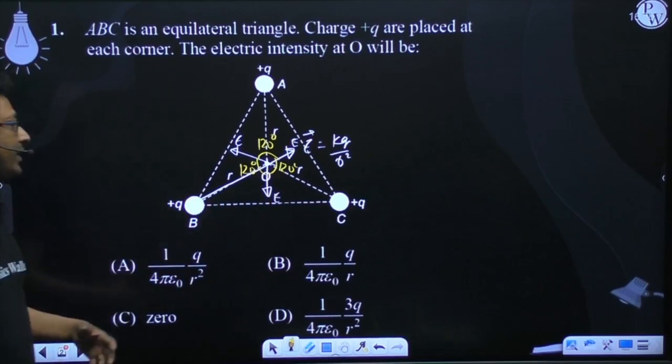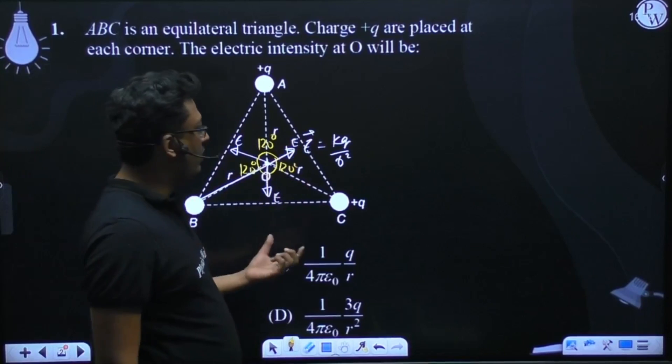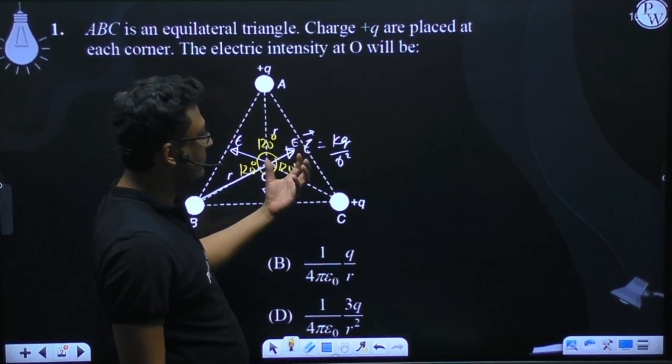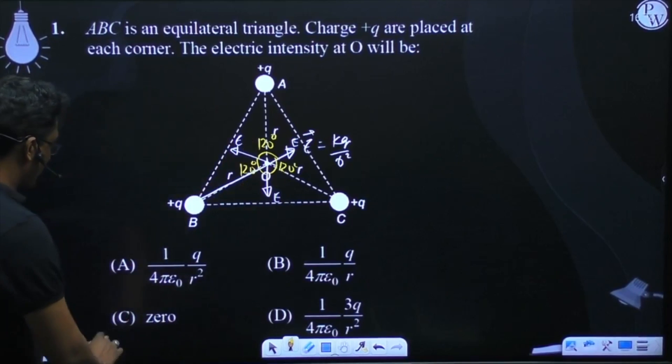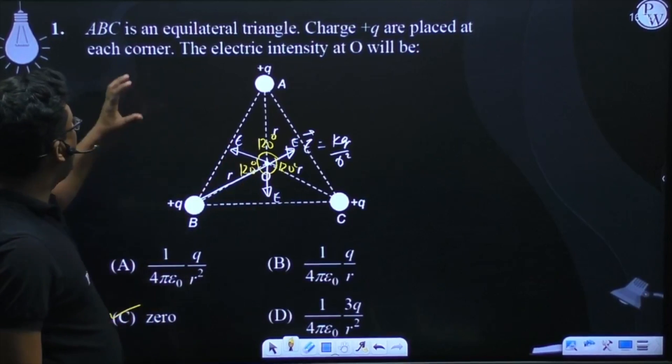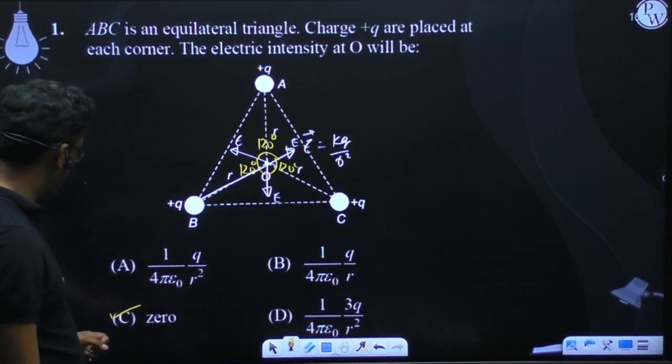They are forming again a complete triangle and by vector addition, we all know that the net electric field intensity at this point will be 0. So the answer for the first question will be C, zero.